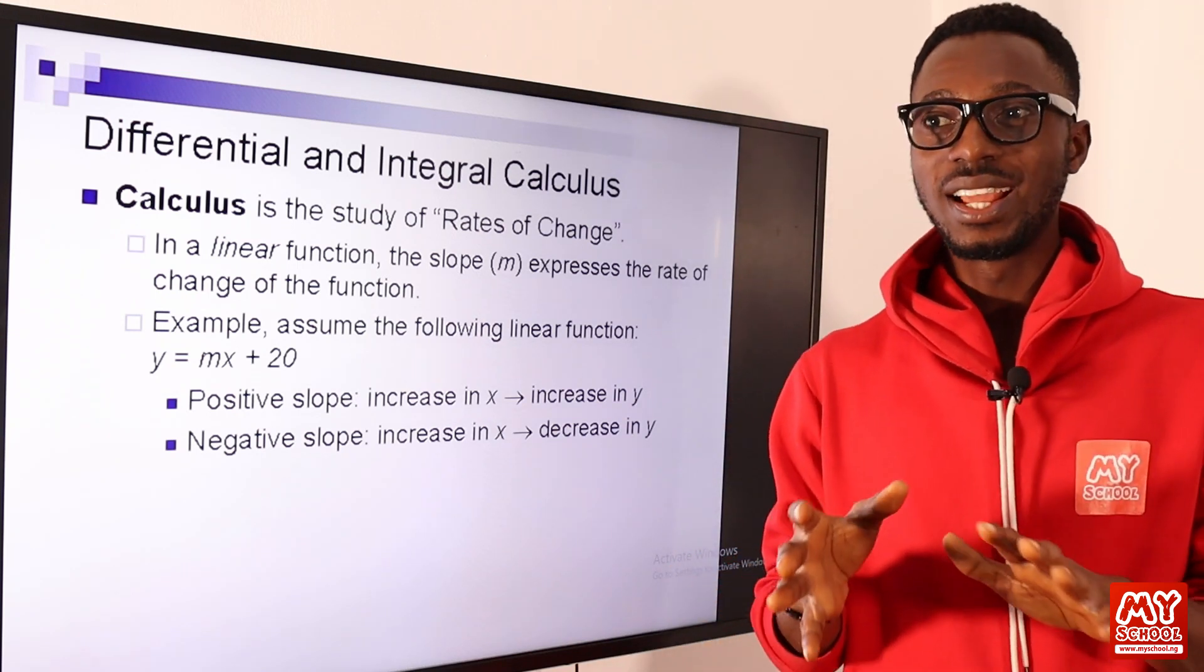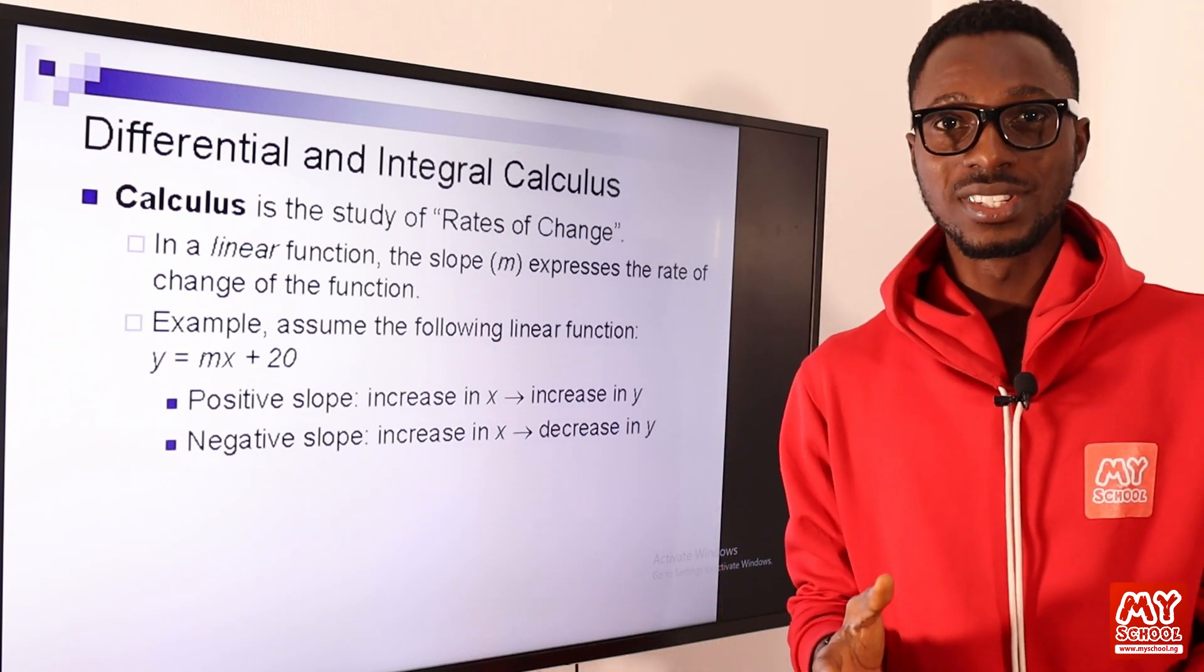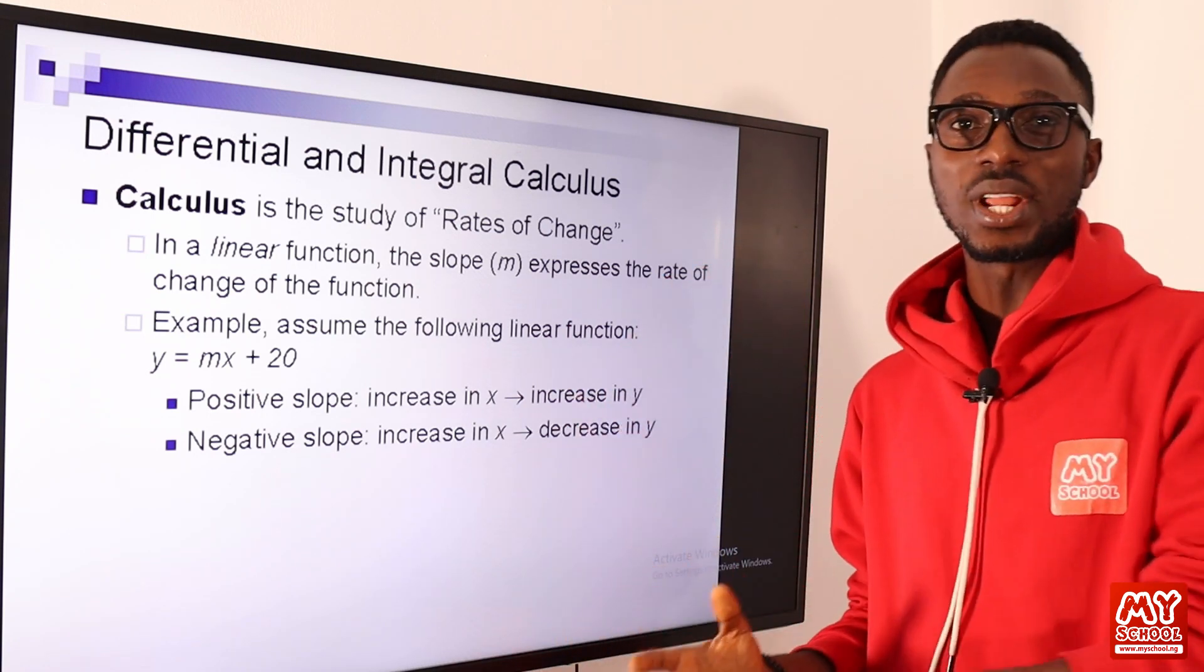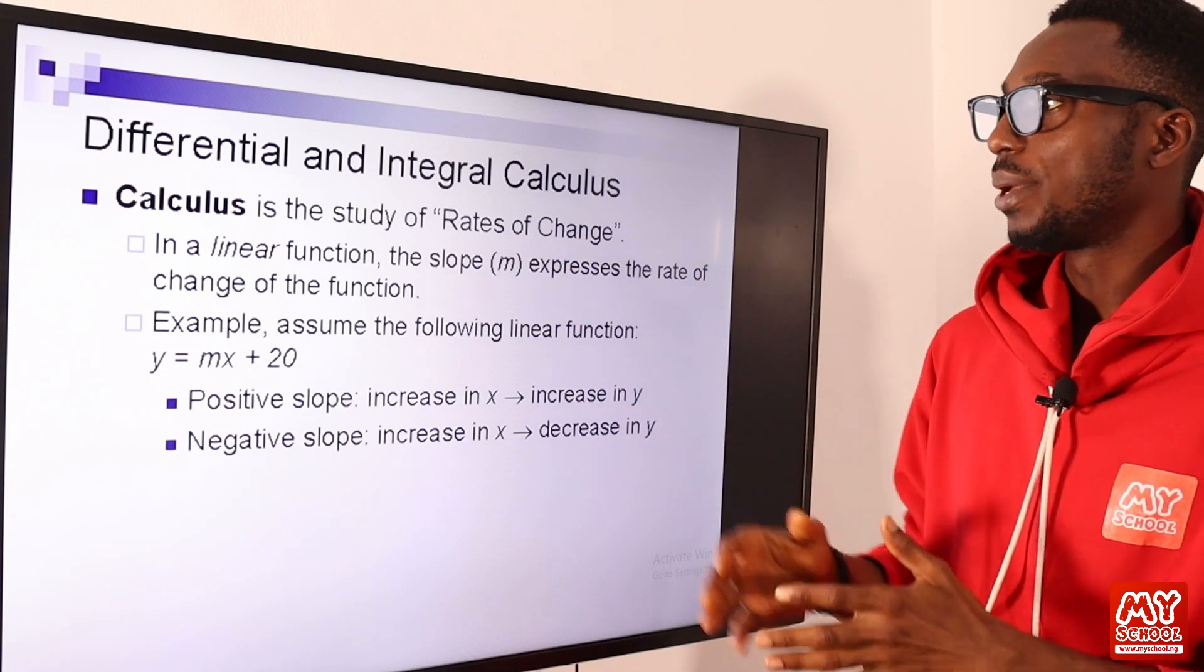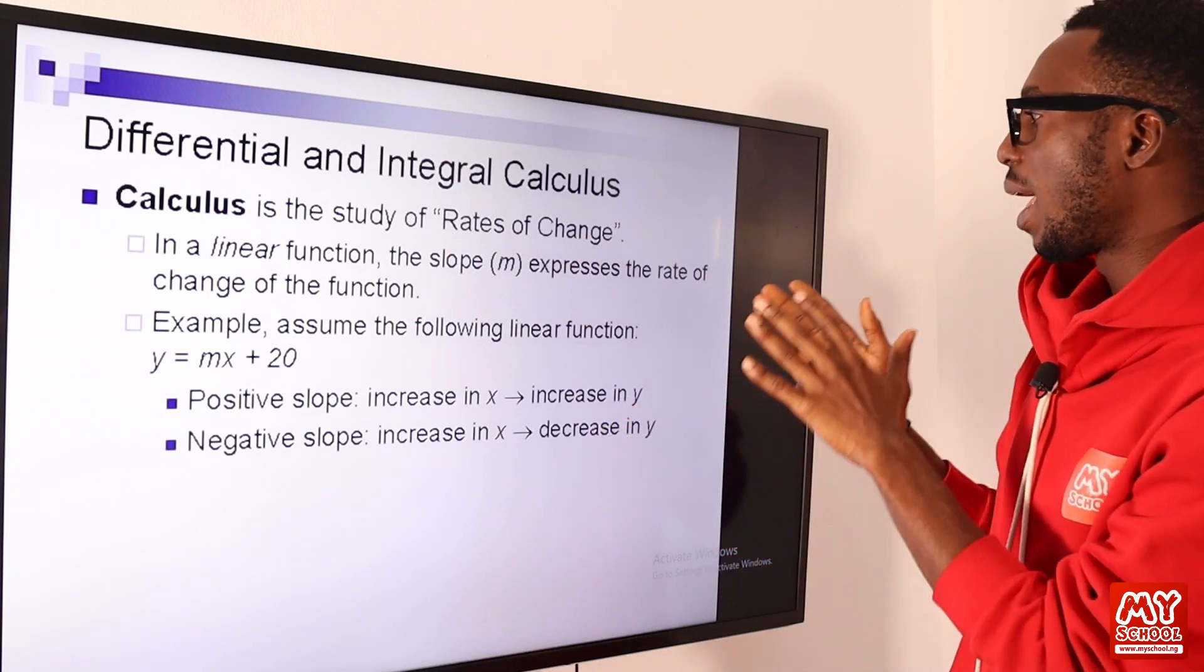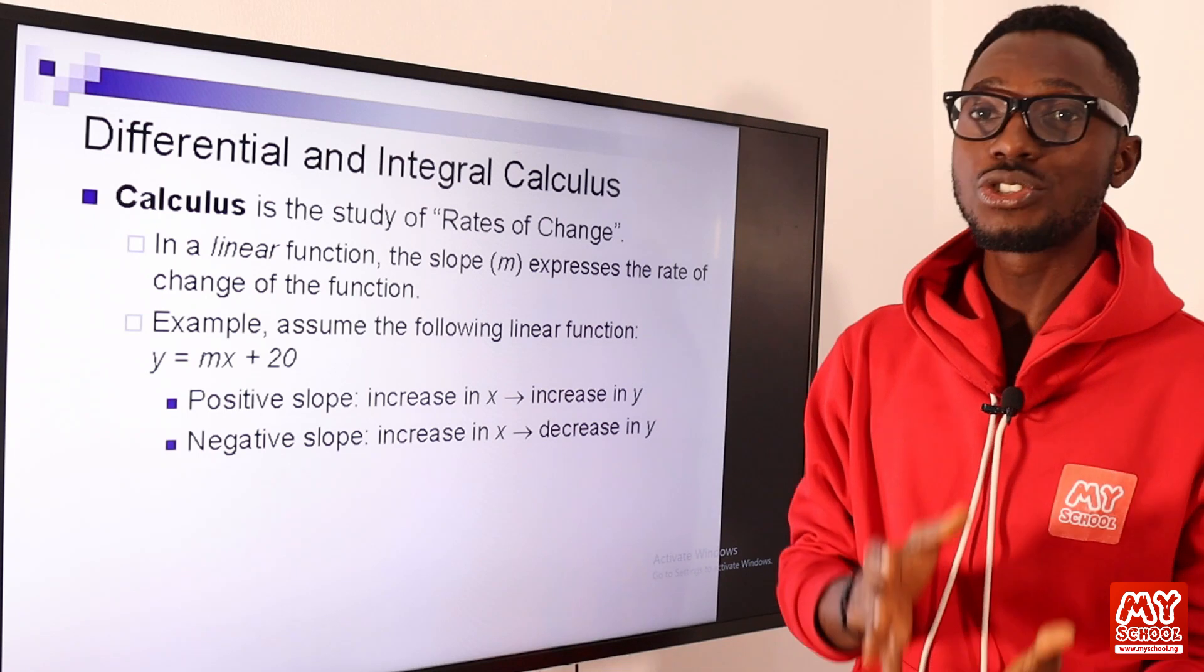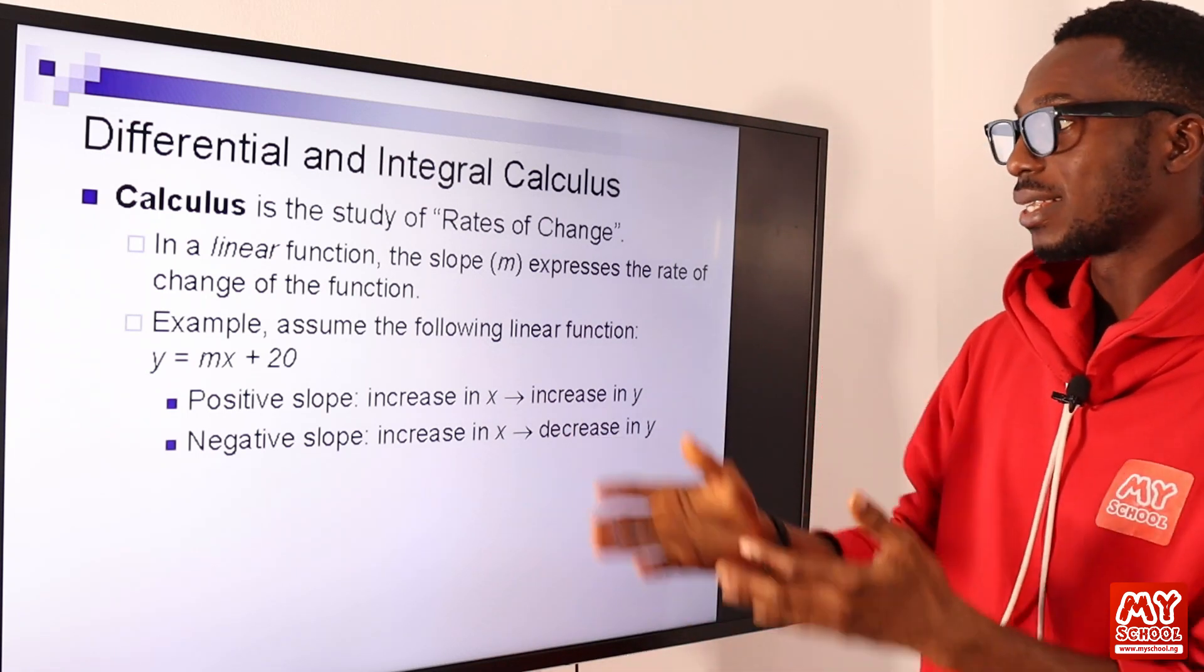So you are actually studying how change occurs and at what rate is this change happening. We have a linear function. This is just an instance. The slope M expresses the rate of change of the function.